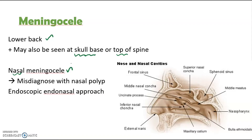Nasal meningocele is usually congenital, but in adults it may be due to trauma or surgery. It may sometimes be misdiagnosed with nasal polyps due to similar appearance. It may be treated with an endoscopic endonasal approach, which is a minimally invasive technique involving inserting an endoscope inside the nasal cavity to resect the sac and reconstruct the defects in the skull.